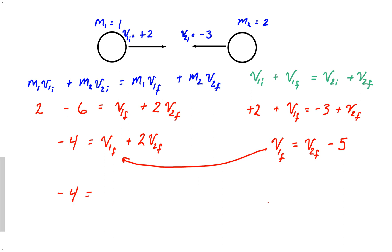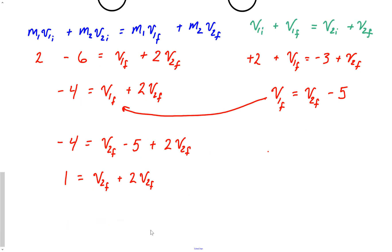Negative 4 equals V1 final. So that would be V2 final minus 5 plus 2 V2 final. Now let's see. Get rid of this 5. So add it to both sides. So that's 1 equals V2 final plus 2 V2 final. And hopefully you got a little idea of what's about to happen here. So that would be 3 V2 final equals 1. So that means that we've got an answer of V2 final is 1/3, 1/3 meters per second, centimeters per second, whatever unit you chose to use.